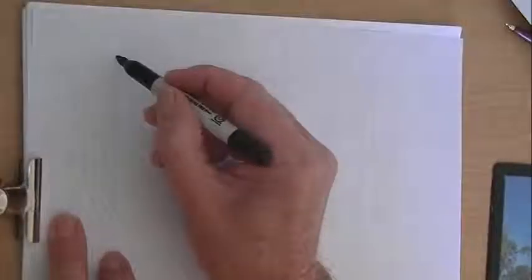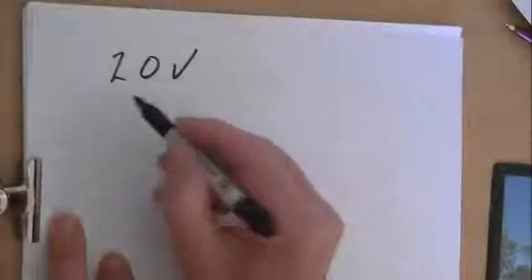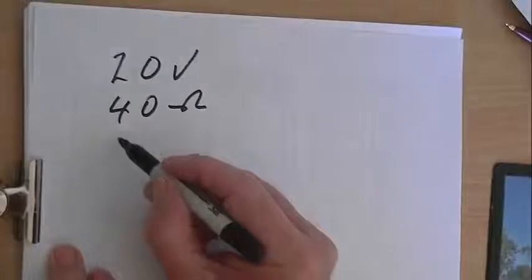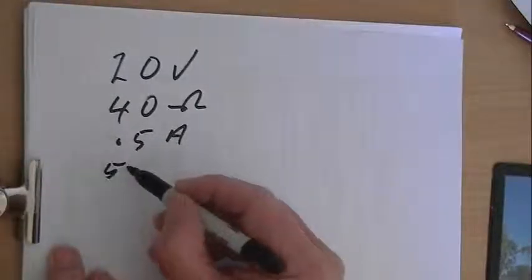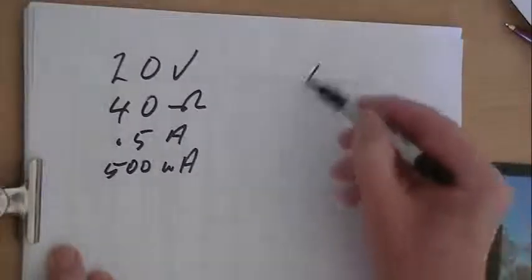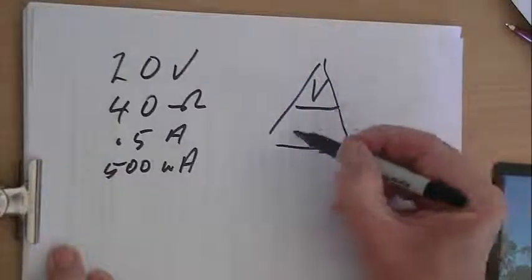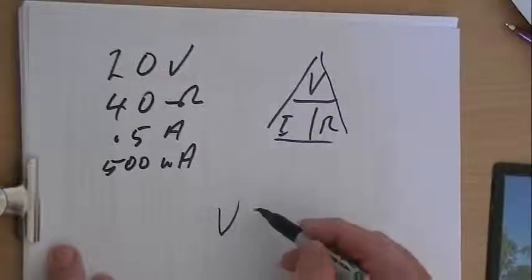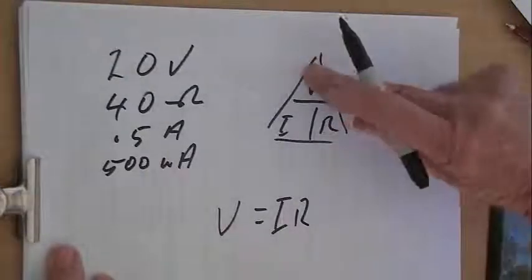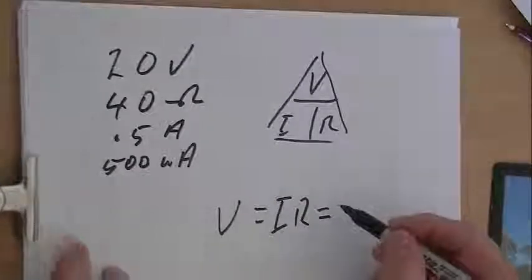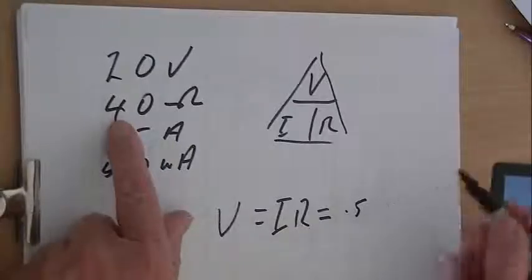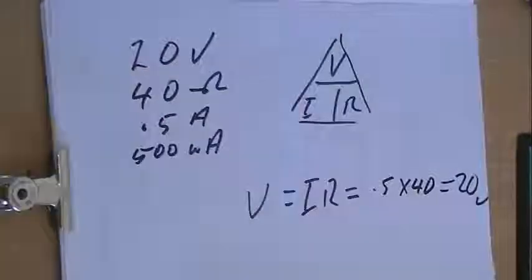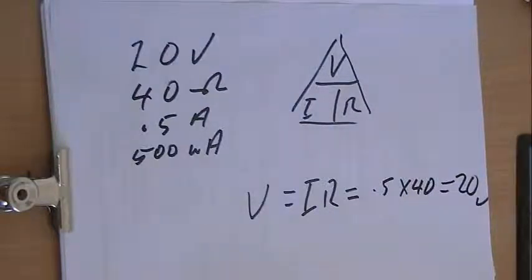Now let's look at the other example. Again we had 20 volts. This time we had 40 ohms, or 39 near enough for this example. And we had half an amp, or if you like, 500 milliamps. A little triangle again. V equals IR. And this time we will work out the voltage. So voltage equals IR from our triangle up there. The current was 0.5, the resistance was 40. So half of 40 equals 20. And as I said earlier, that is no coincidence. That is Ohm's Law.